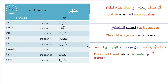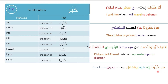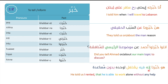Another example: ento khabbaratu Ahmad an mawdou'na al-ra'isi lil-munaqqasha — you told Ahmad about our main topic for discussion. And: huwa khabbarana anno fi yishtaghil lawhado bidun musa'ada — he told us that he can work by himself, alone, without any help. Bidun means 'without' and musa'ada means 'help'.